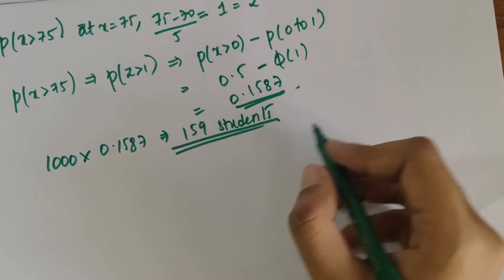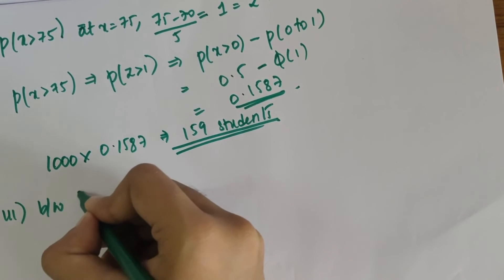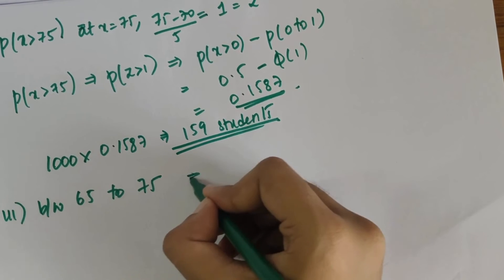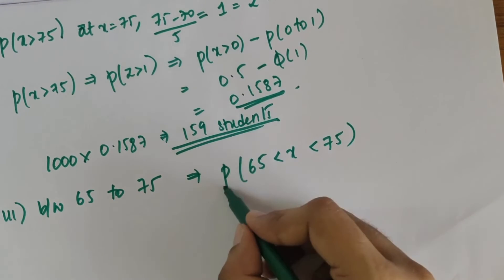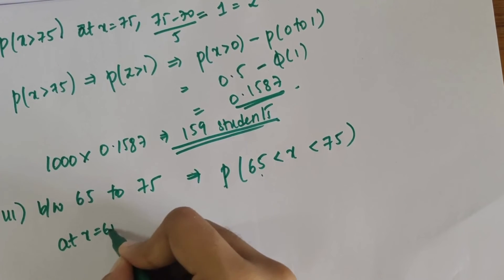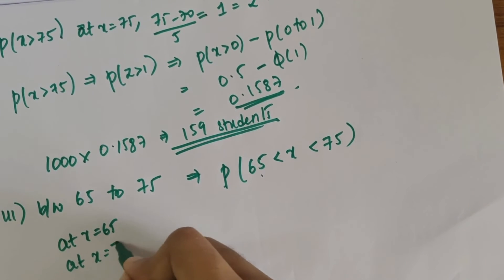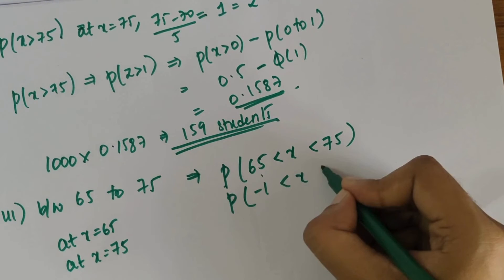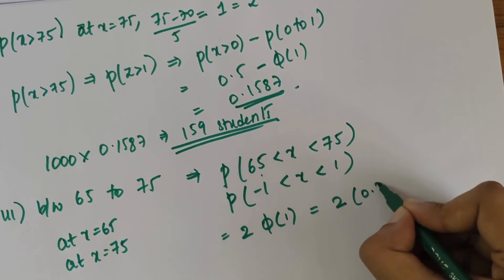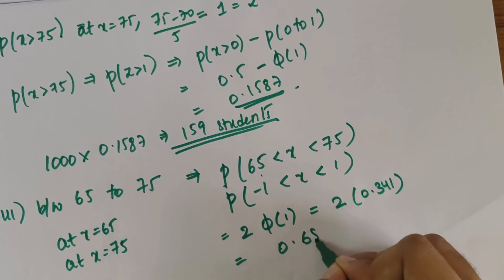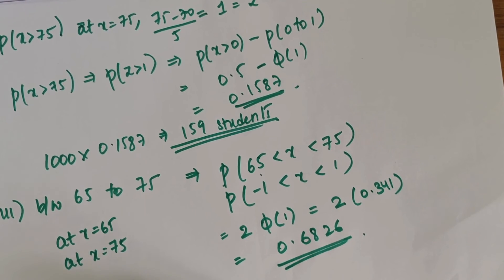The third part is between 65 and 75: P(65 < x < 75). We've solved that at x = 65, z = -1, and at x = 75, z = 1. This can be written as 2 times P(1), which is 2 × 0.3413 = 0.6826.